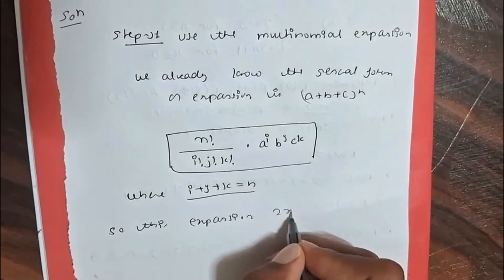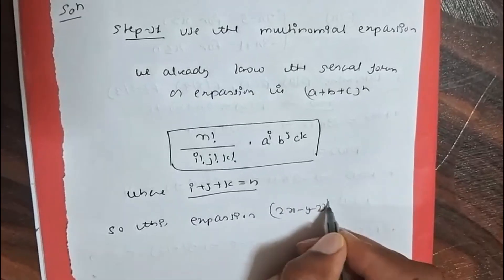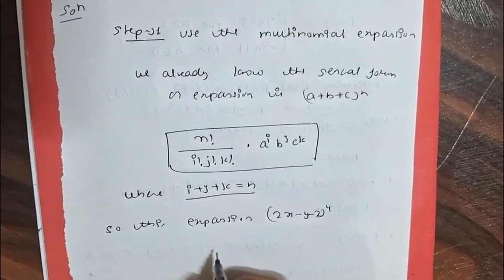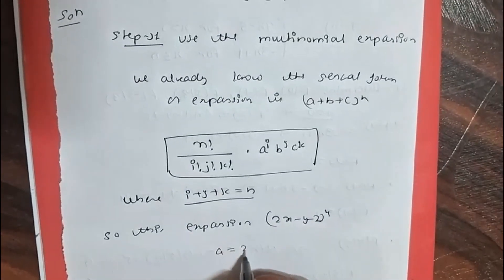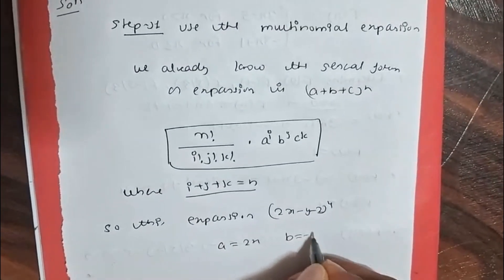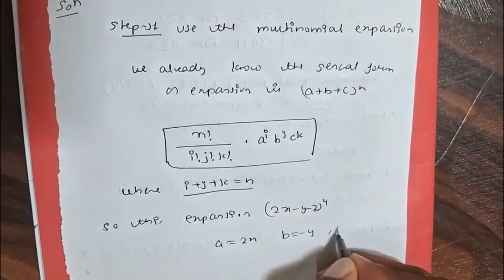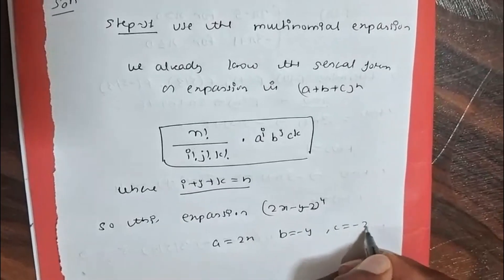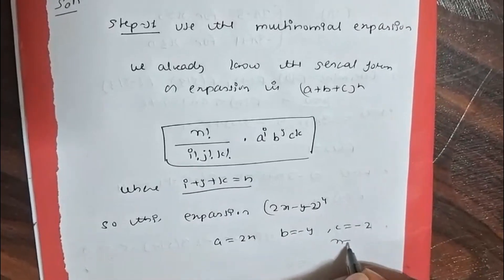In our expression (2x - y - z) to the power 4, we identify: a = 2x, b = -y, c = -z, and n = 4.